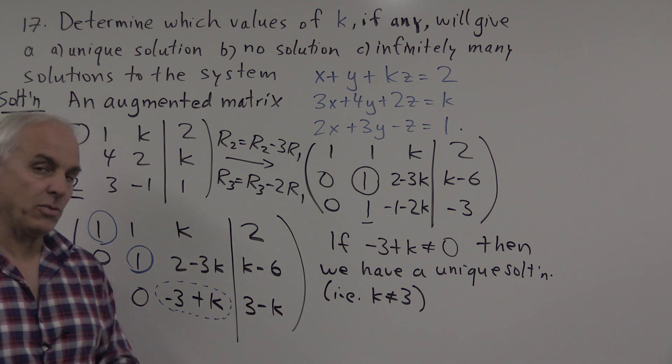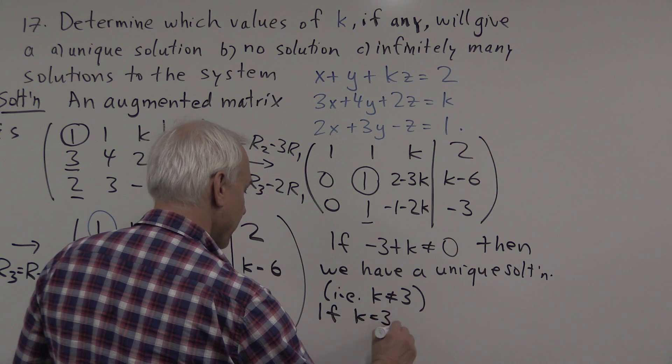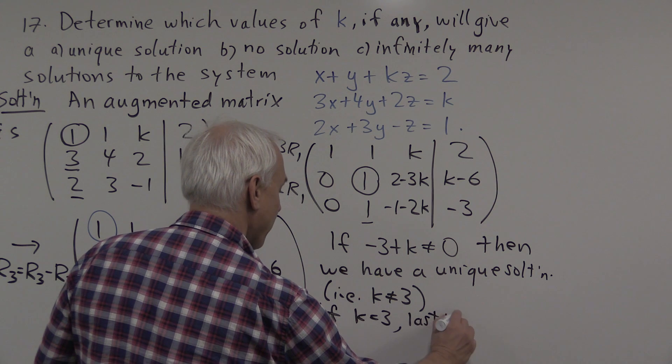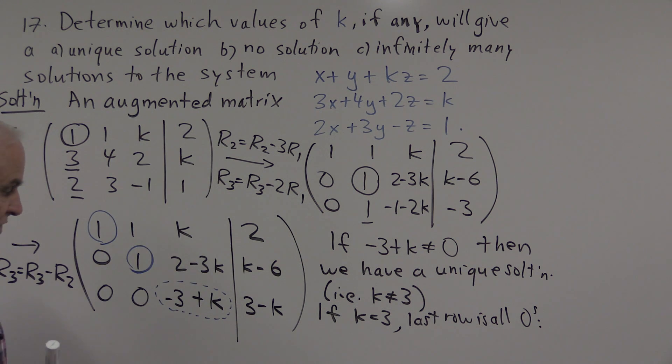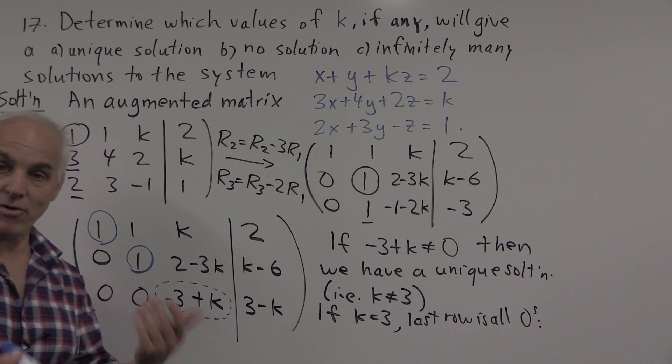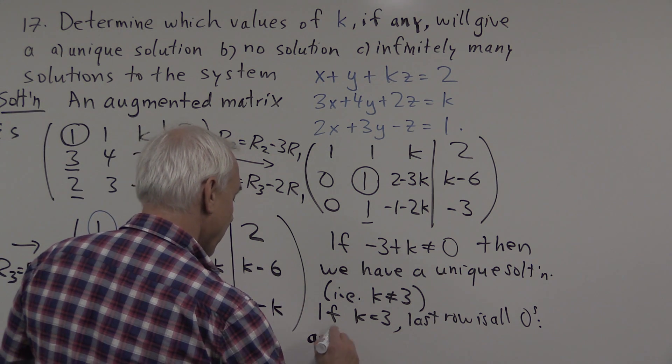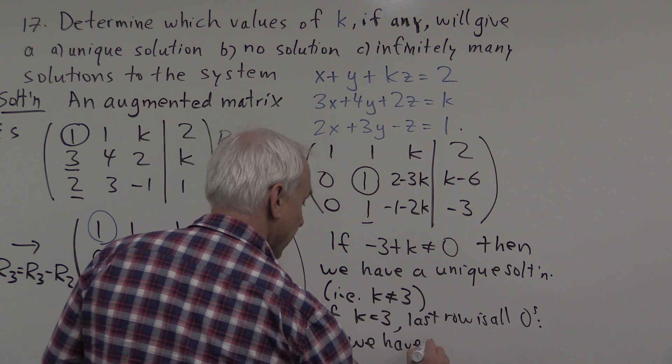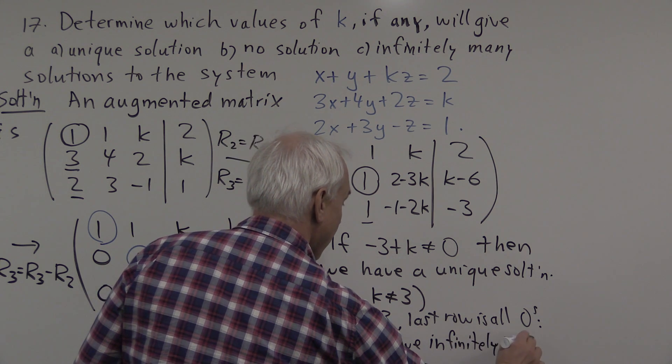Suppose k equals 3. In that case, this entry will be 0, and this entry will also be 0. So if k equals 3, then the last row is all 0s. In which case, we will get a situation where we have two leading columns and one non-leading column, and then there is an infinite family of solutions, because we can set this variable to be a parameter. So if k equals 3, the last row is all 0, and we have infinitely many solutions.